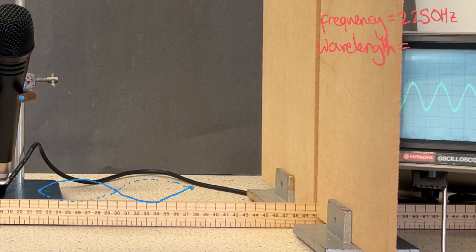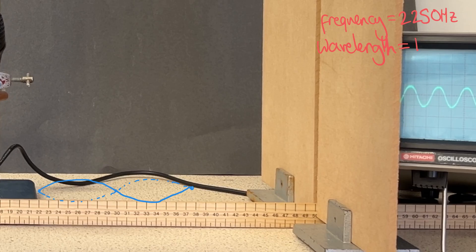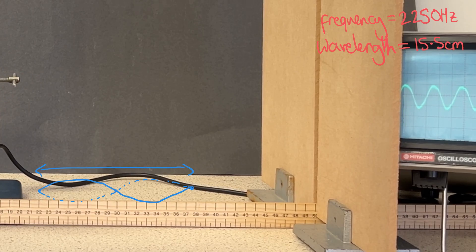The microphone has therefore moved 15.5 cm, and that will give us the wavelength of the sound wave.